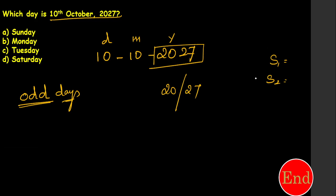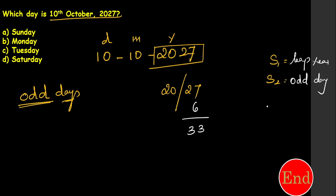Step 1: find the leap years in 27. How many 4's are there in 27? Six 4's make 24, so there are 6 leap years. Step 2: add 27 plus 6 to get odd days. So the odd day total is 33.